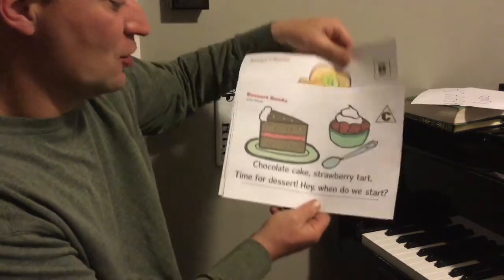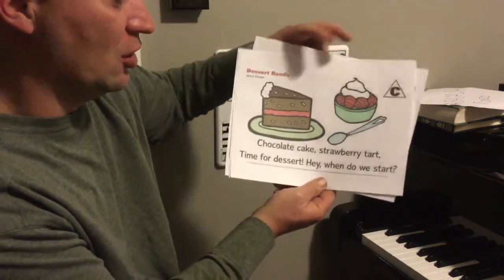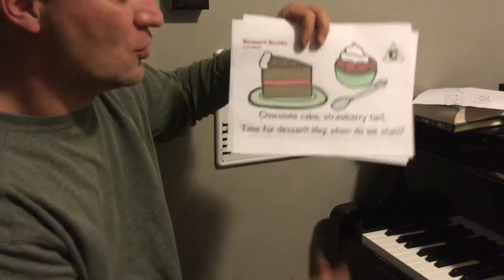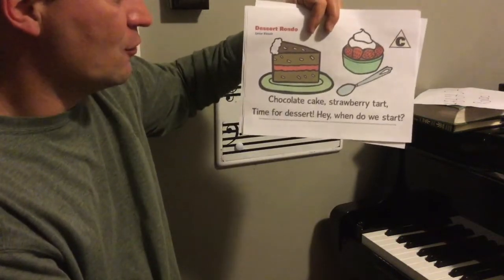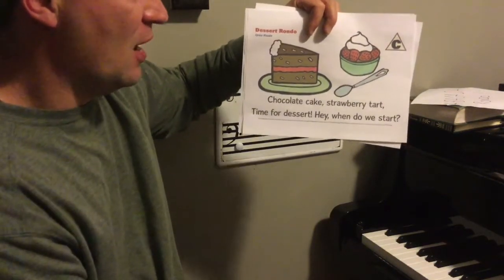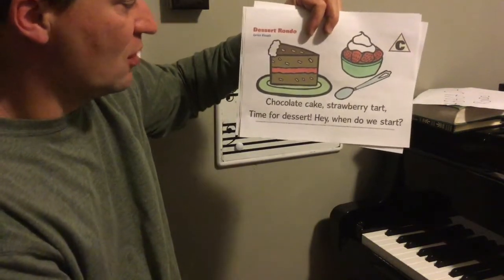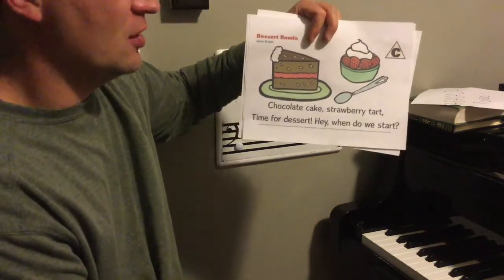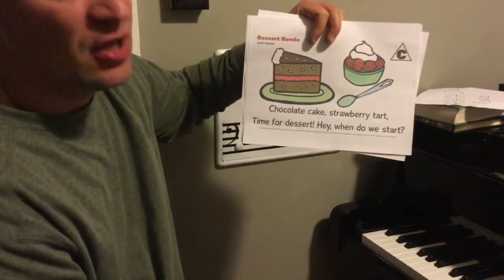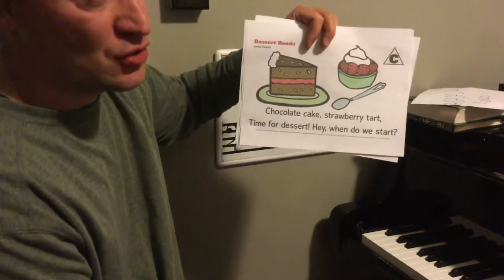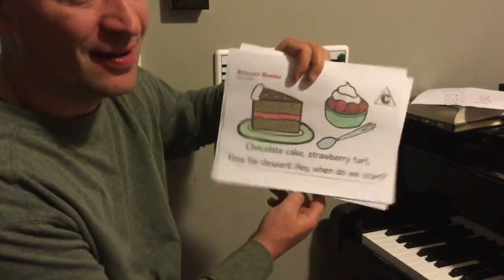Next part: 'Chocolate cake, strawberry tart. Time for dessert. Hey, when do we start? Chocolate cake, strawberry tart. Time for dessert. Hey, when do we start?'